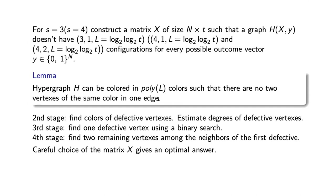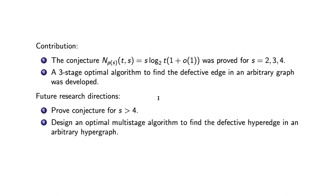This scheme has problems in the general case — for example, the key lemma is incorrect for S greater than 4, so the problem for S greater than 4 remains open. To conclude, we proved the conjecture for cases S equals 2, 3, and 4, and also developed a three-stage optimal algorithm to find the defective hyperedge in an arbitrary graph. Thank you for your attention.